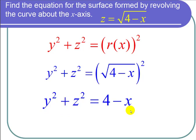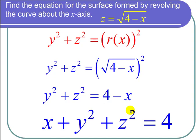Now to make it a little prettier let's add x to both sides. We get that the equation for the surface formed by revolving z equals the square root of 4 minus x about the x-axis is x plus y squared plus z squared equals 4. And I'm done with the problem.